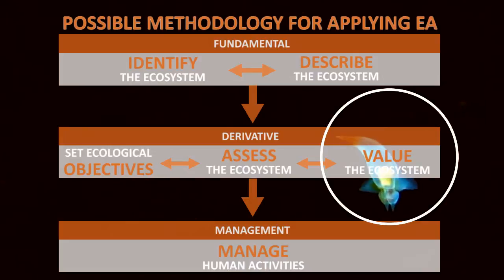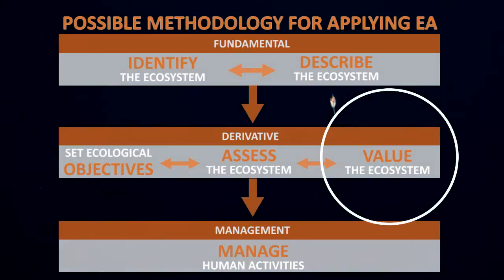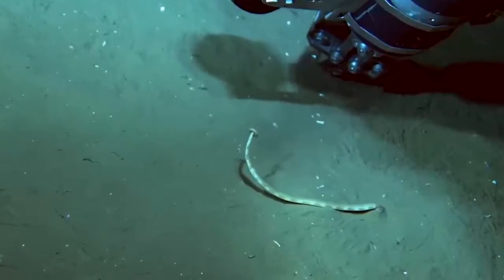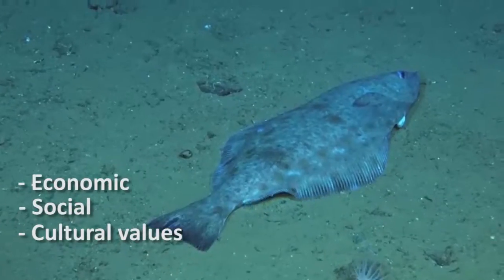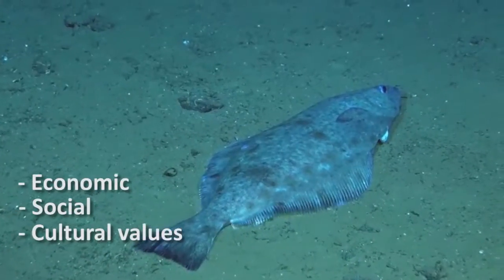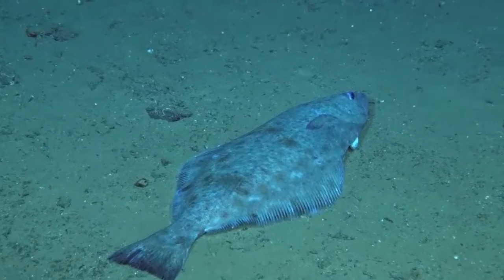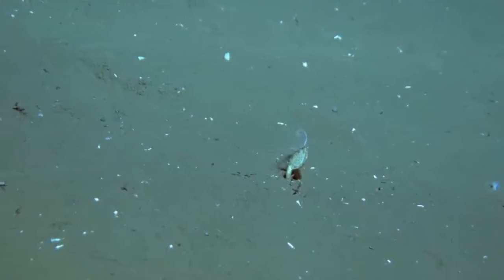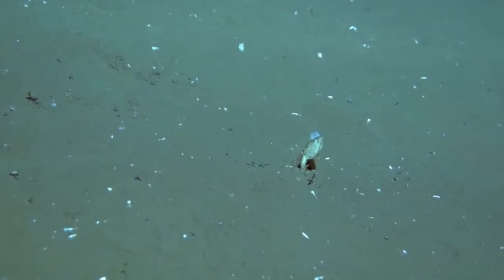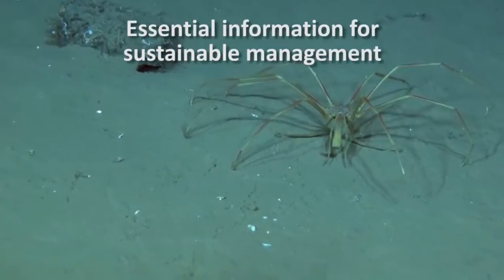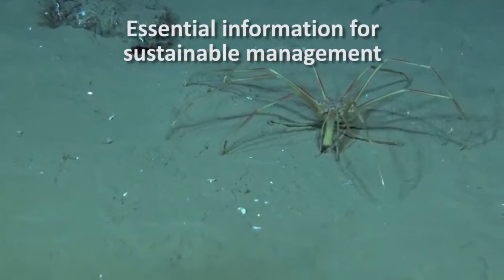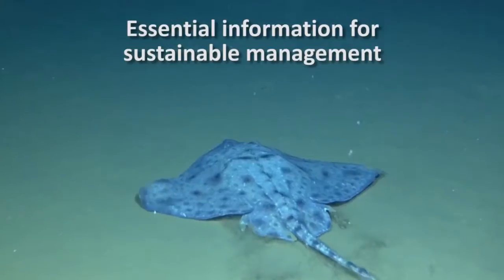The next element is valuing the ecosystem by identifying and valuing its goods and services in order that economic, social, and cultural values may be more fully incorporated into mainstream socioeconomics. Social, cultural, and economic values of ecosystems, goods, and services are essential information for sustainable management.